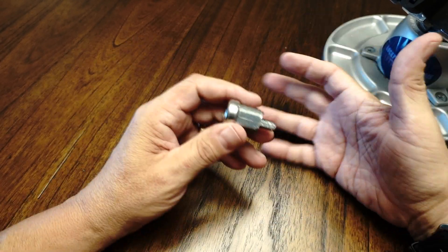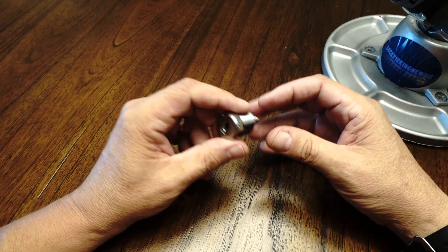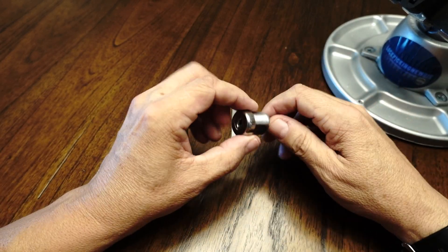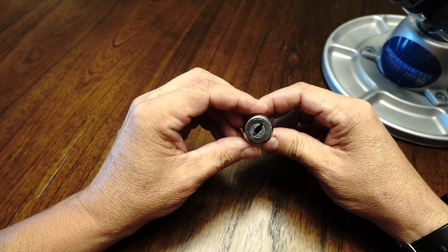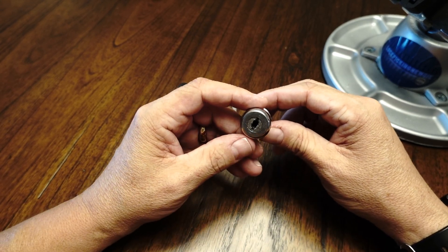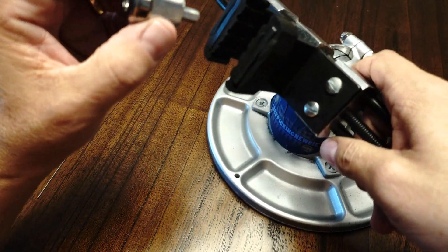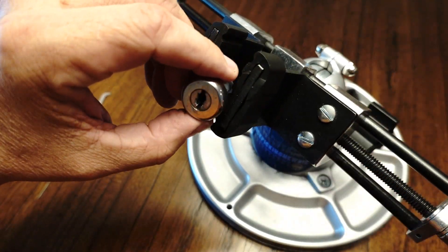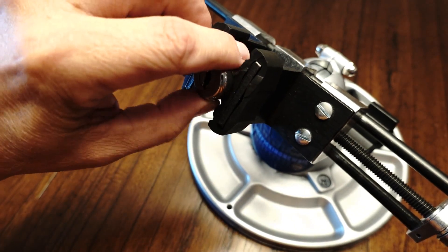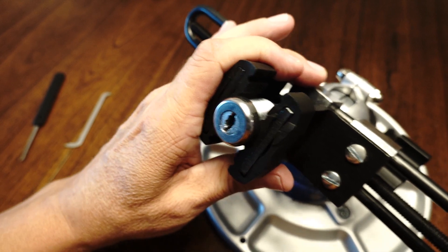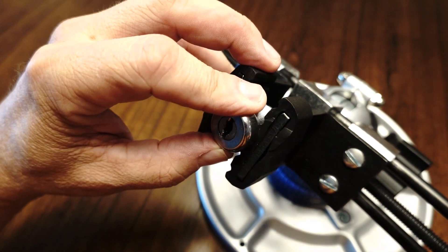I start taking it apart layer after layer and it finally comes down to this core. I tried picking it for months actually and never got anywhere with it, but a while back I finally gotten it open and now I'm gonna show you how I did it.